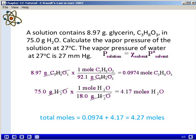We will then calculate the number of moles of water present. So we'll convert 75.0 grams of water to moles using the molar mass of 18.0 grams.